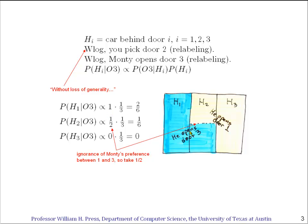But what if the car is actually behind door 2, which you've picked? Now Monty has two possible choices: he can either open door 1 or door 3. And for this example, we're going to suppose that Monty has no prejudice as to which of those he opens.